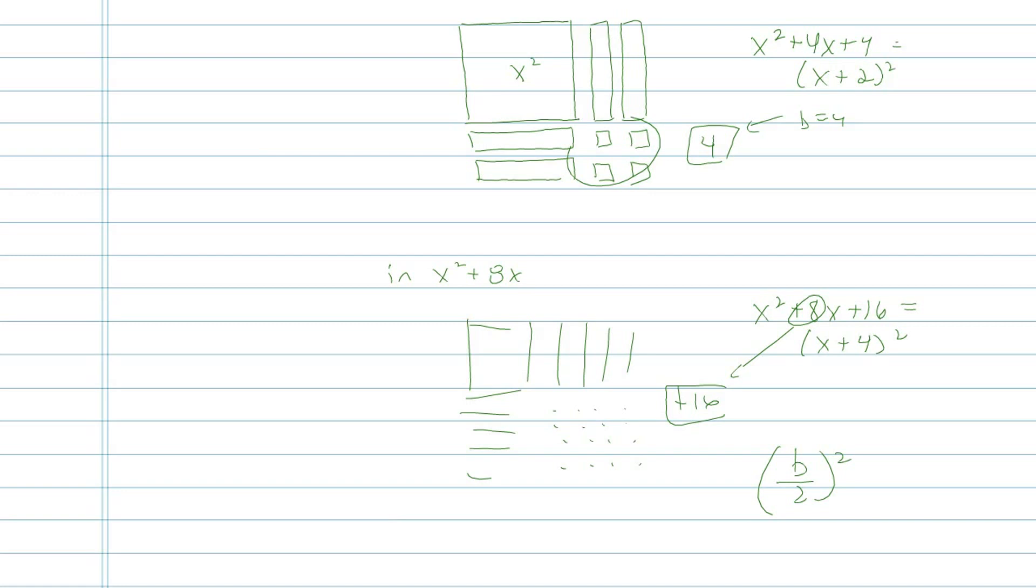Or like in the next one my b value is 4. 4 divided by 2 is 2. 2 squared is 4. There it is. Here, 8 divided by 2 is 4. 4 squared is 16. So this is what's asking you guys to get at geometrically.